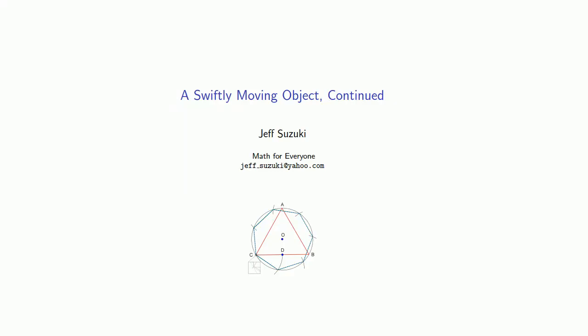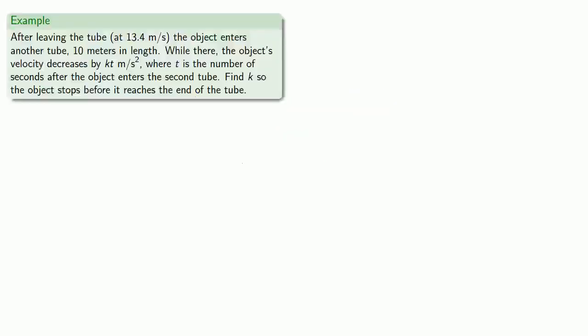Let's continue to track the motion of our object. Suppose that after it leaves the tube, it goes into another tube, 10 meters in length, and while there, its velocity decreases by kt meters per second squared, where t is the number of seconds after it enters the second tube. Here, we want to find k so the object stops before it splats into the end of the tube.